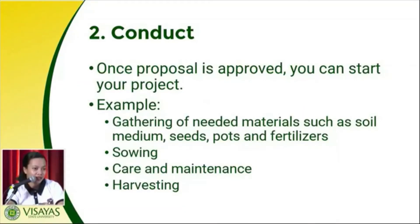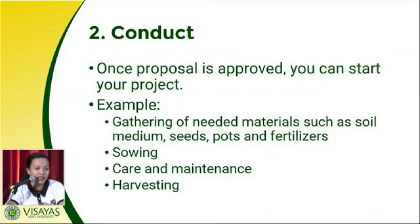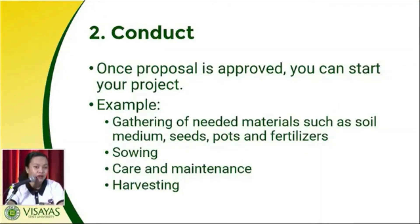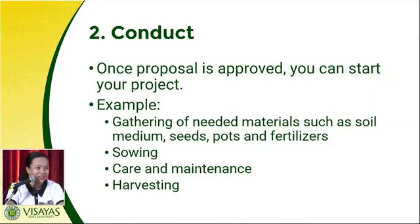For pots, if you have difficulty purchasing them, you can use recyclable materials such as empty container bottles. If needed, fertilizers — but different manures are likely available in your locality. You can collect manures like carabao manure, chicken droppings, and cow manure.